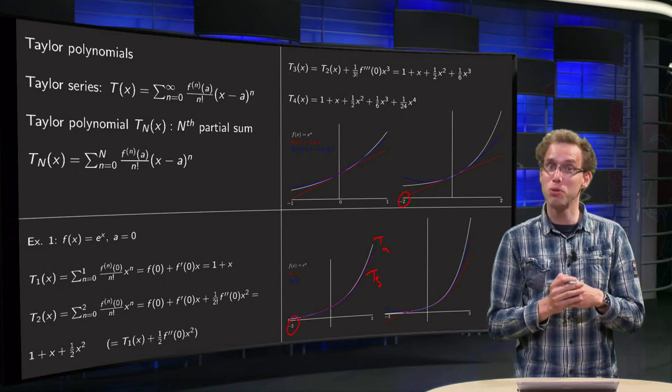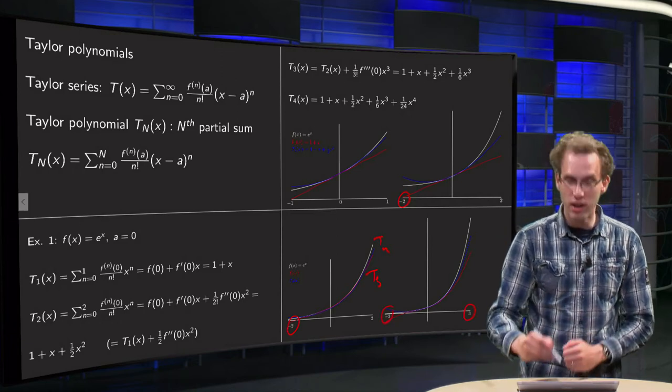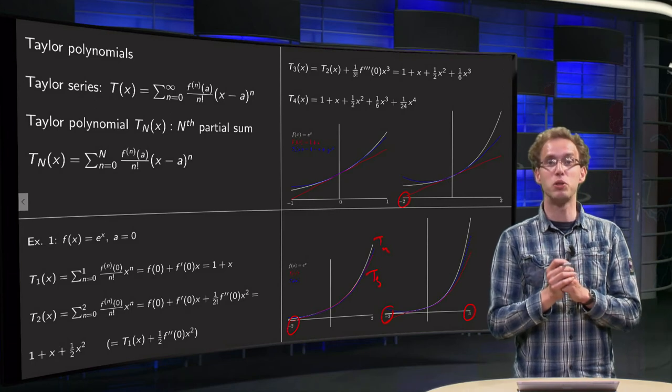But guess what happens if you zoom out again? Going from three to minus three, then the T3 and T4 are not good anymore.